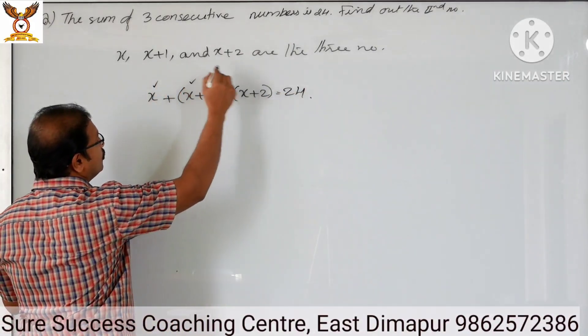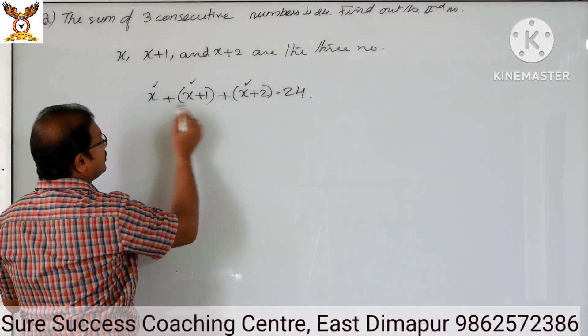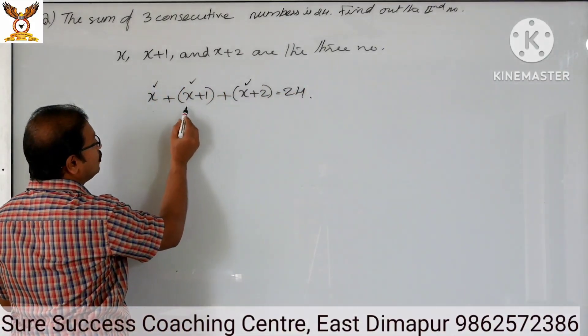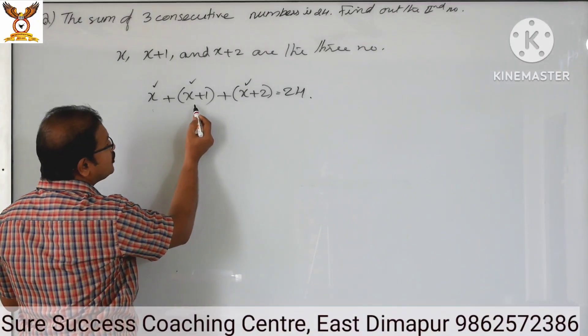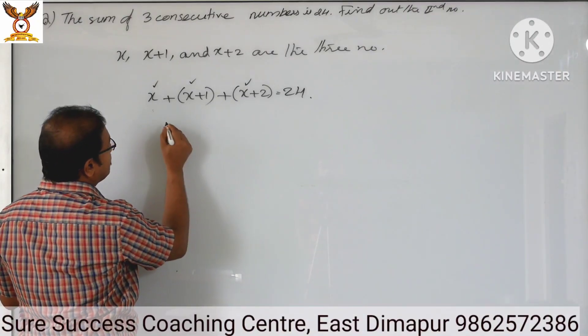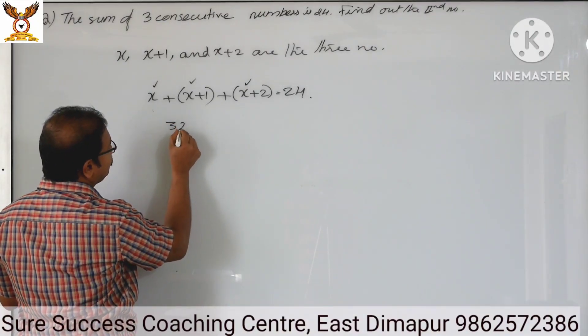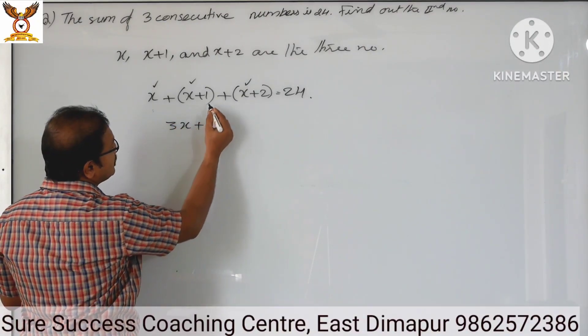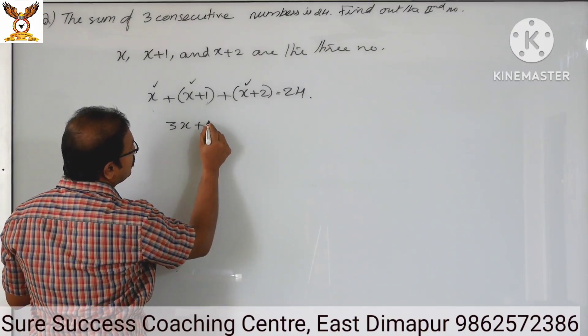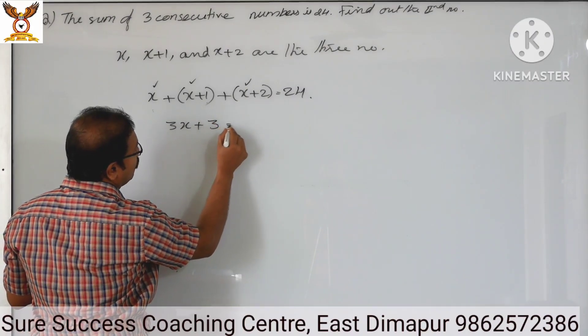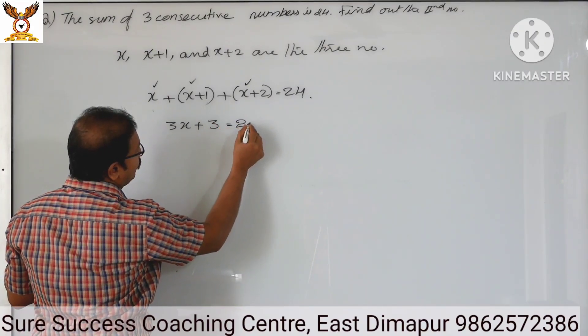See, 1, 2, 3 — 3x is here. That means x plus x plus x, that is 3x, plus 1 plus 2, that is 3, equals 24.